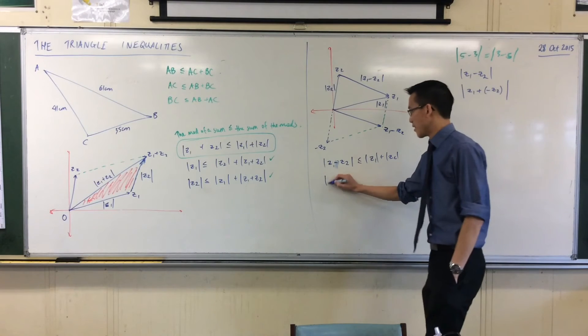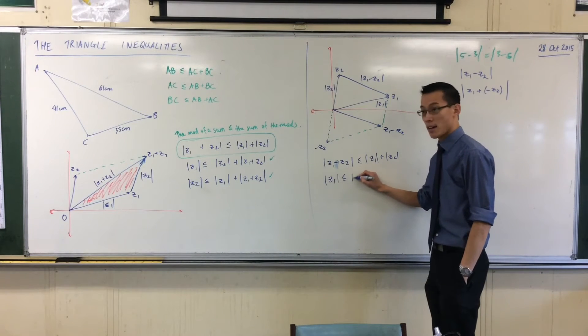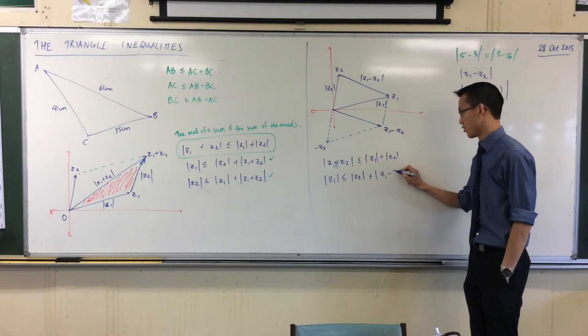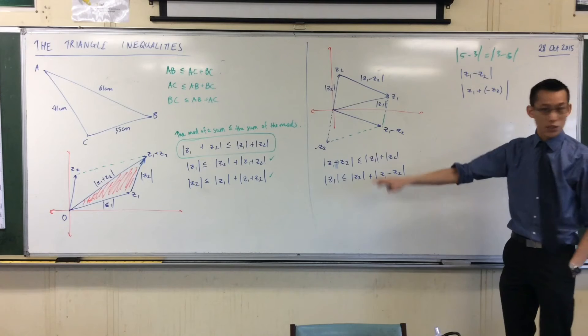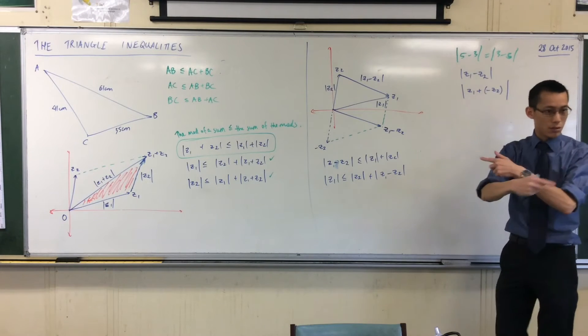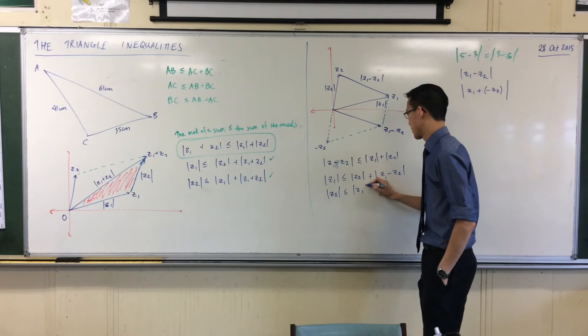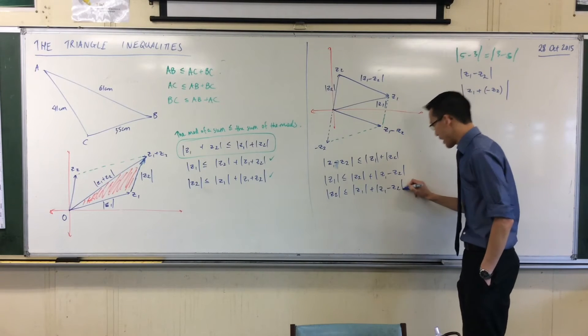Z1 is less than or equal to Z2 plus Z1 minus Z2. Good. And I've got one last one, which is this one, but with the Z1 and Z2 swapped, okay? Like so.